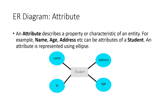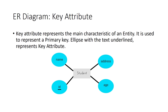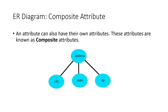Next, attributes — for example, the student entity. We add attributes using ellipses: name, ID, address. We identify key attributes here. For a composite attribute, for example address, we can further divide it — next, district, city, pin code, etc.